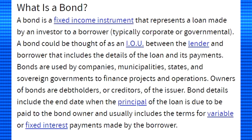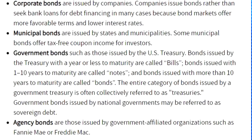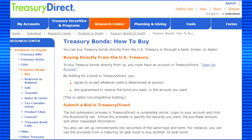Bonds are used by companies, municipalities, states, and sovereign governments to finance projects and operations. There are four categories of bonds. Corporate bonds are issued by companies. Municipal bonds are issued by states and municipalities. Government bonds are issued by the U.S. Treasury. Agency bonds are issued by government-affiliated organizations like Fannie Mae or Freddie Mac. You can buy bonds directly from the U.S. Treasury or you can buy from banks, brokers, and dealers.